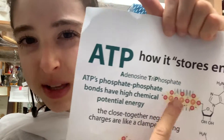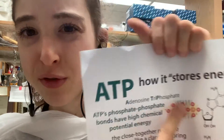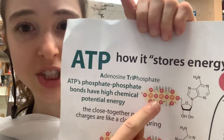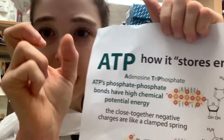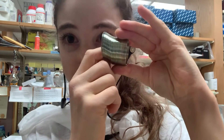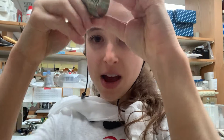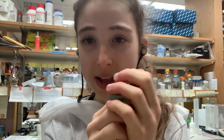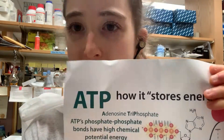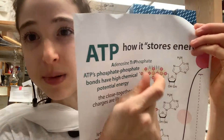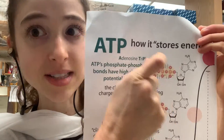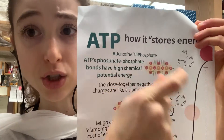The thing with ATP is that you have three of these really negatively charged things clustered right next to each other. I like to think of this like a clamp spring — if you were to let a spring go, it would zoom out. The energy stored with ATP is actually the energy being used to hold together these negatively charged groups.